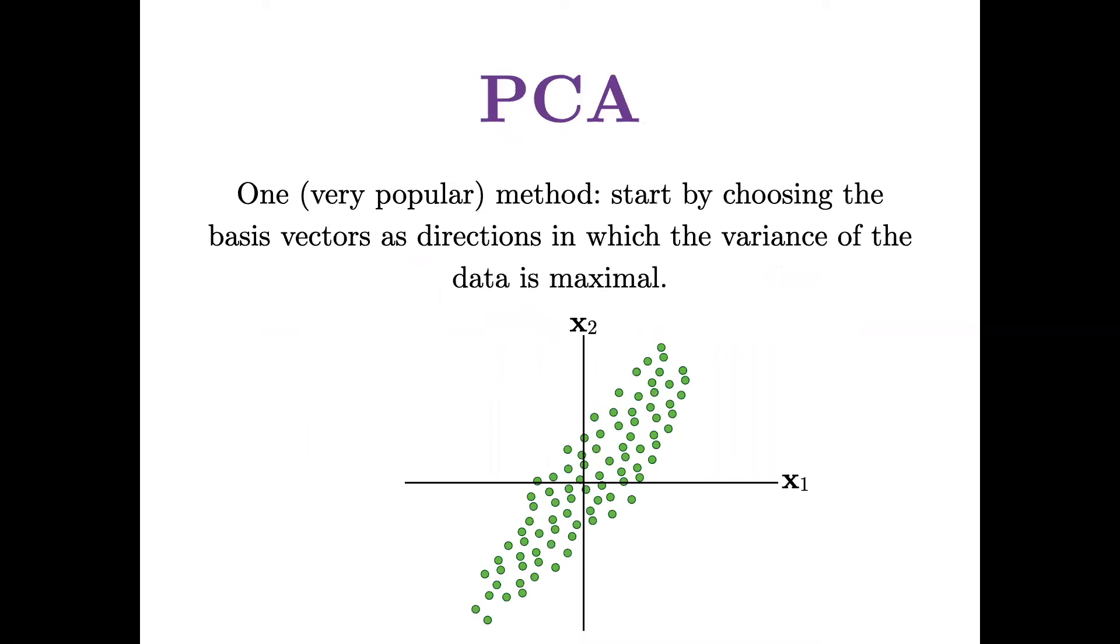Well, one very popular method is to start by choosing basis vectors as directions in which the variance of the data is maximal. Now, this concept of directional variance is not one that you've been exposed to, most likely, before.